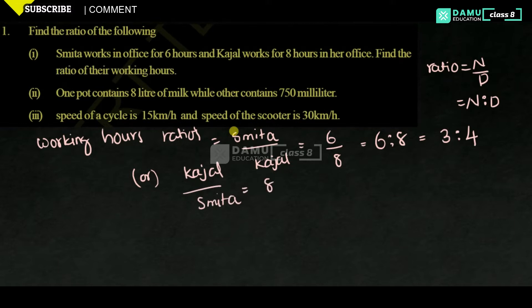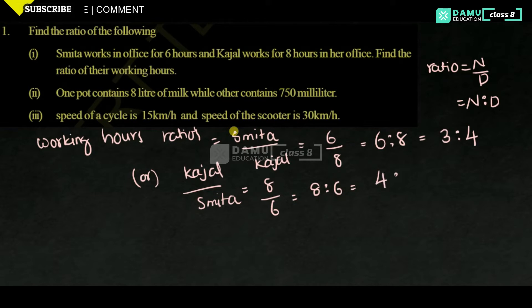Then it is Cajal's hours 8 while Smither is 6, that is 8 is to 6. Simplifying: 2 fours are 8 and 2 threes are 6, so the ratio is 4 is to 3. This is the first one.